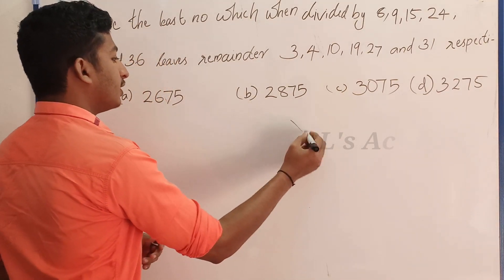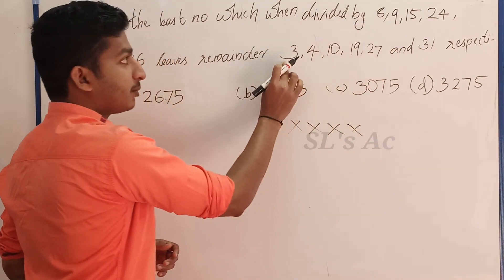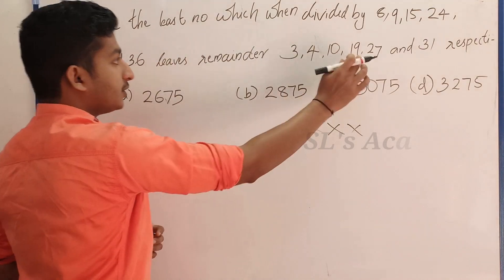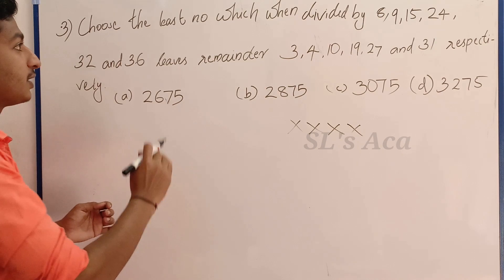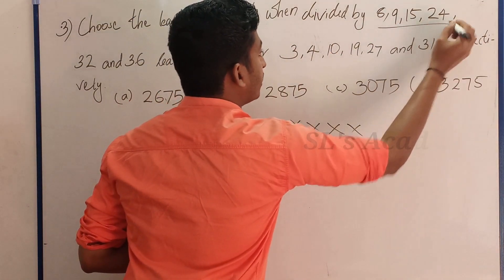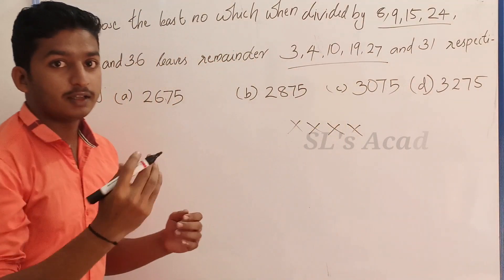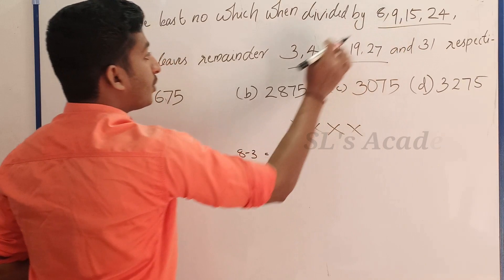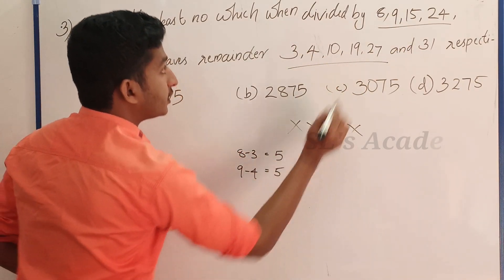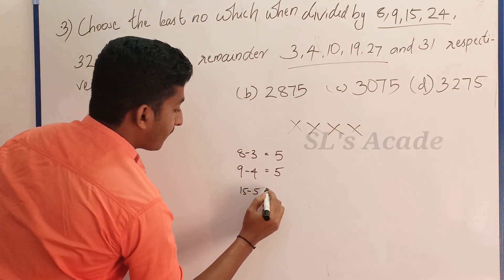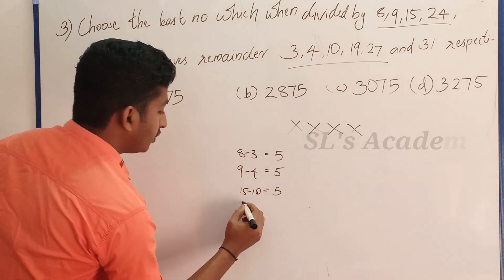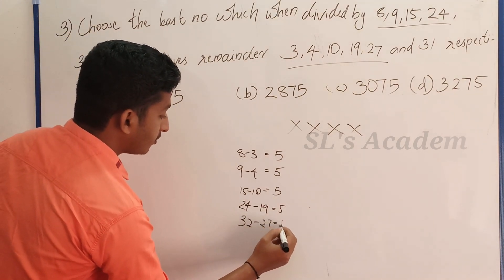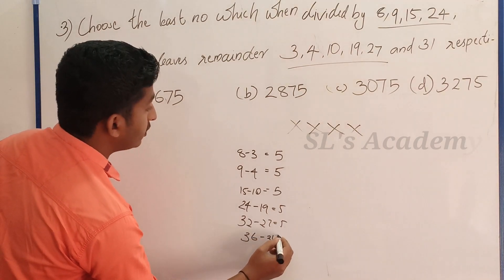One number divided by these values: 81 divided by 3, 81 divided by 4, 81 divided by 15 leaving remainder 10, 24 divided leaving remainder 19, 32 divided leaving remainder 27, 36 divided leaving remainder 31. The difference is constant — 8 minus 3 is 5, 9 minus 4 is 5, 15 minus 10 is 5, 24 minus 19 is 5, 32 minus 27 is 5, 36 minus 31 is 5. The difference is constant at 5.